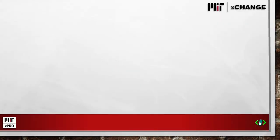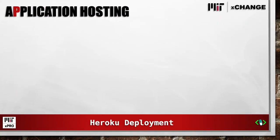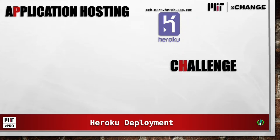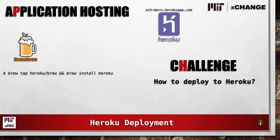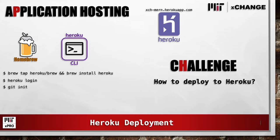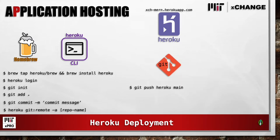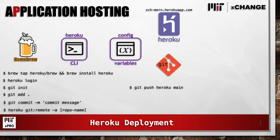For application hosting, we chose to go with a Heroku deployment. Docker was not used. The challenge was how to get the files deployed to Heroku. Homebrew was used to install the Heroku command line interface. We then log into Heroku and use Git to initialize a repository and make our first commit. We then add our remote Heroku repository and use Git to push our main branch to Heroku. The final step is to configure the Heroku environmental variables.